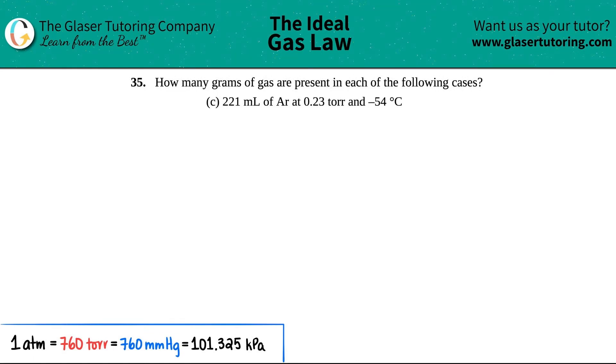Number 35: How many grams of gas are present in each of the following cases? Letter C. In this case we have to find out how many grams of the gas are for 221 milliliters of argon at 0.23 torr and negative 54 degrees Celsius.